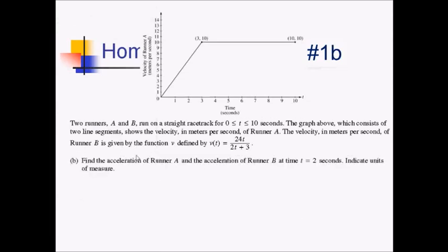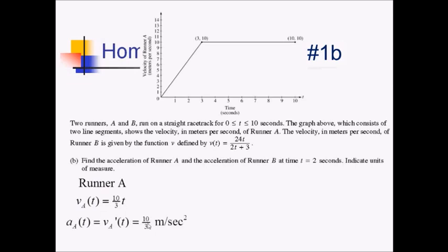For part B, we want the acceleration of both runners at time two. For runner A, velocity is ten-thirds t from zero to three seconds, and that's all we need since we're asking about time two. The derivative gives acceleration of ten-thirds meters per second squared. For runner B, I'll use the calculator, but first I explicitly write that acceleration of t equals v prime of t.